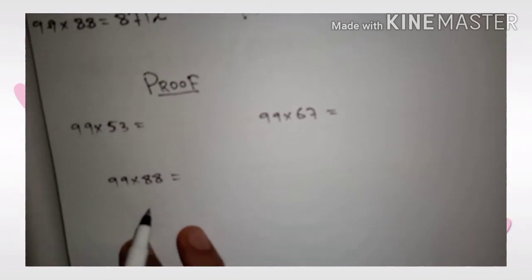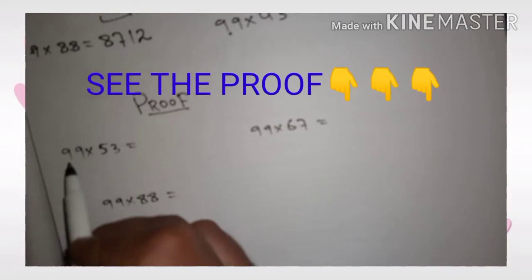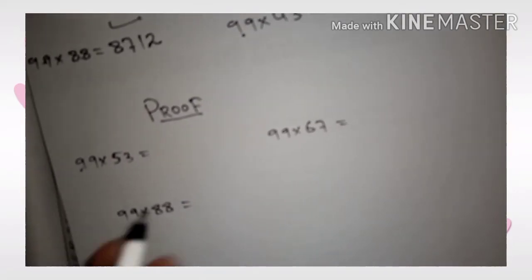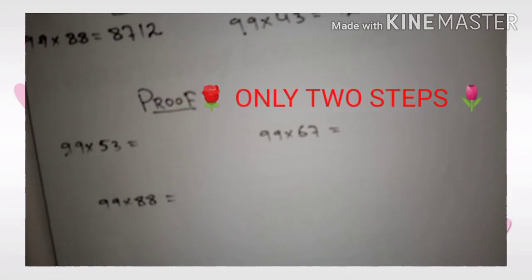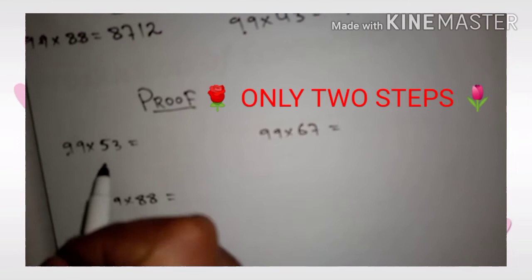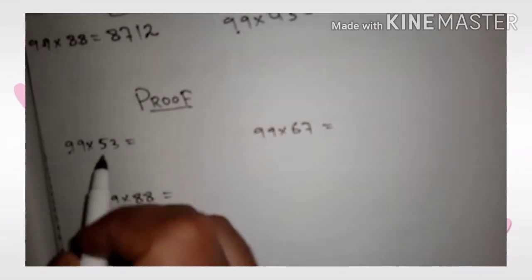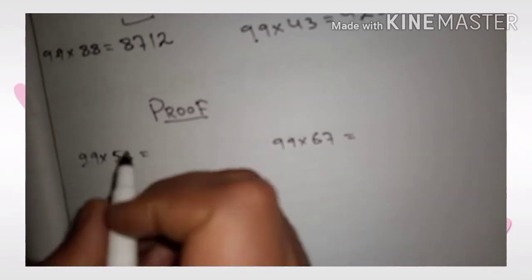Yes, it is possible. Let's see its proof. Suppose you have 99 into 53. You only have to follow just two steps, only two steps, not more than two steps, I promise. First step: we will subtract 1 from 53. When we subtract 1 from 53, we get 52.